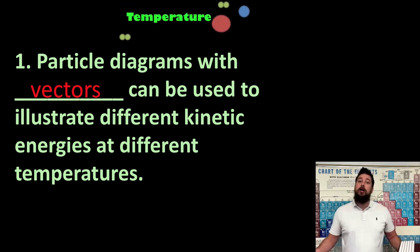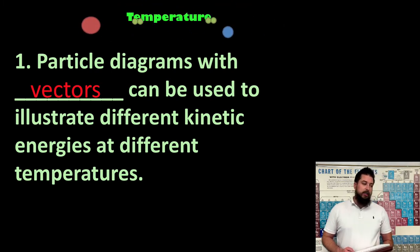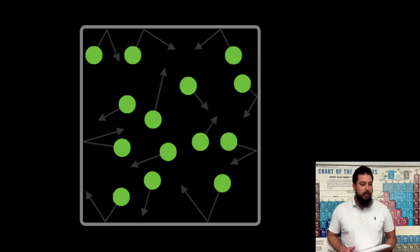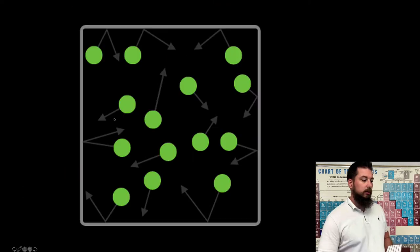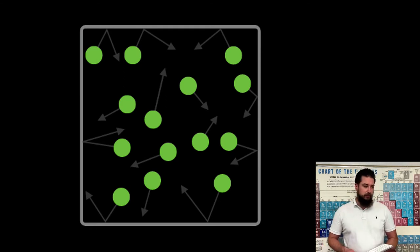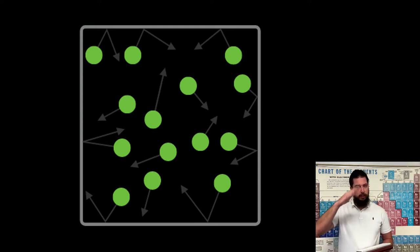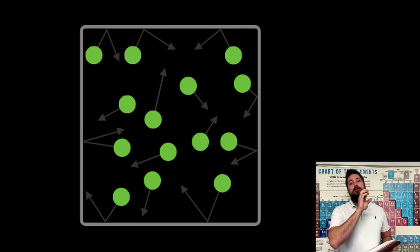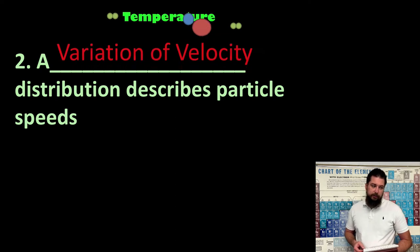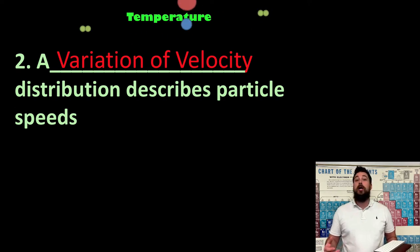Particle diagrams show the direction and magnitude of the direction that particles are traveling. In the example diagram, notice how a smaller vector indicates a particle moving slower and a larger vector indicates a particle moving faster. Particles move at different velocities, but the temperature of the gas is the measure of the average of all of them.